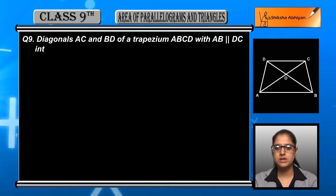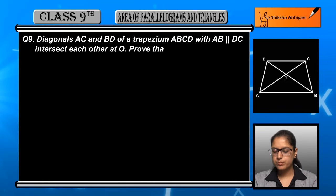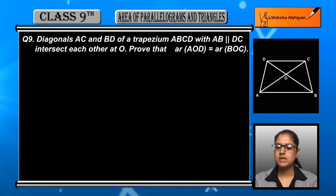A trapezium whose diagonals intersect. We need to prove that area of AOD and BOC are equal. For this, we will first consider two triangles.